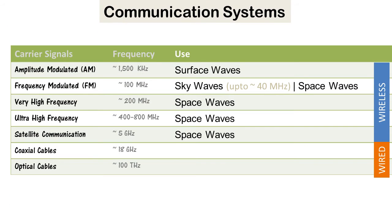There are three types of carrier waves used for transmission: surface waves are used for low frequency transmissions, sky waves are used for intermediate frequencies, and space waves are used for high frequency transmissions.